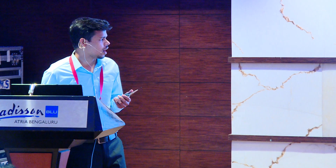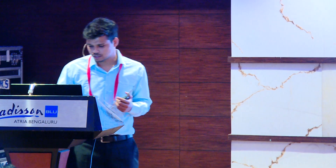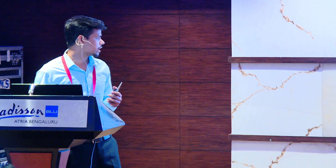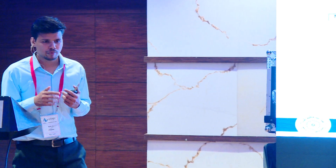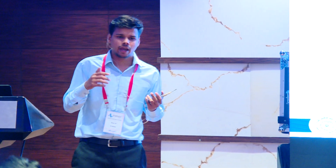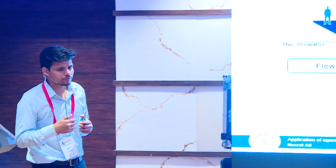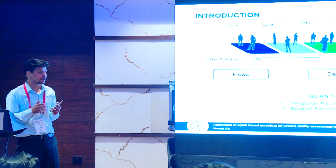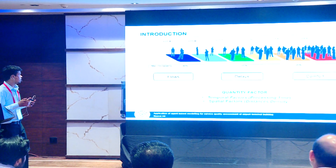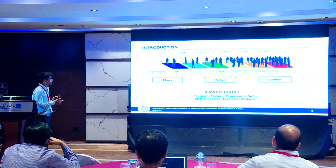So the question is: how do we decrease this process time in terminal buildings? This directly depends on the level of service. If we improve every aspect of the level of service of the terminal building, we ultimately decrease the process time. Level of service is a combination of three parameters: flow, delay, and comfort.